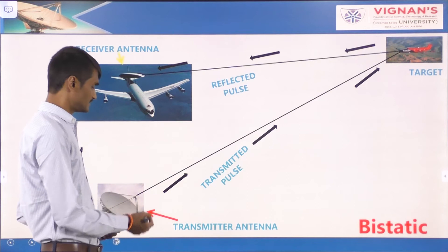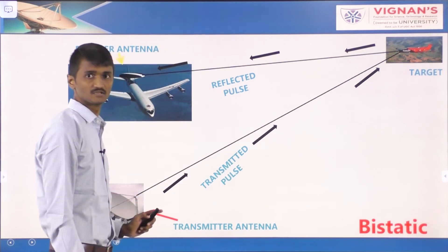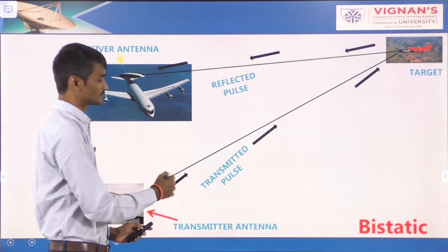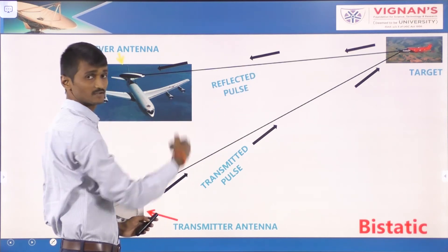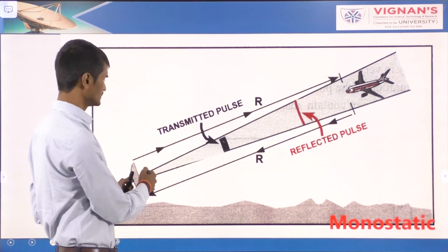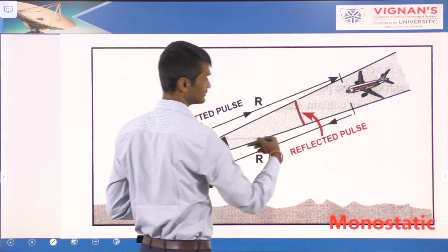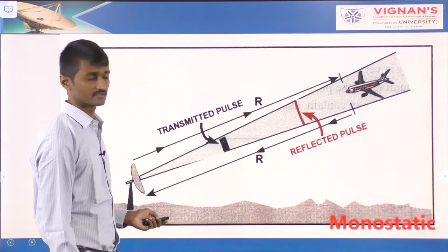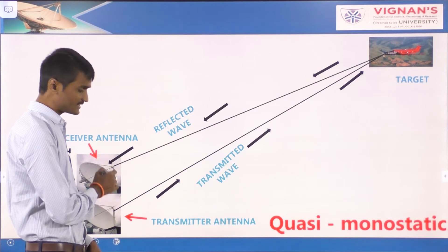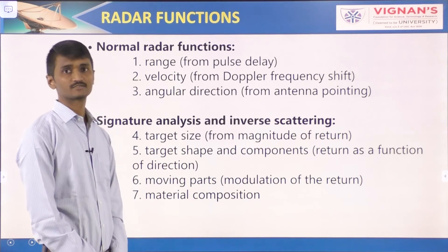In bistatic configuration, transmitting and receiving antennas are separated — viewed from the target at different locations; for example, a ground-based transmitter and an aircraft-mounted receiving antenna. In monostatic, transmitting and receiving use the same antenna. In quasi-monostatic, transmitting and receiving antennas are located on the same aircraft.